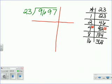So 9,697 minus 9,200. I write it here and subtract: 7 minus 0 is 7, 9 minus 0 is 9, and 6 minus 2 is 4. So I'm all the way down to 497.